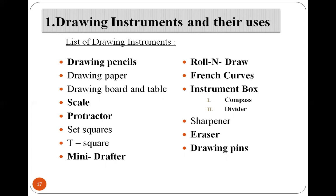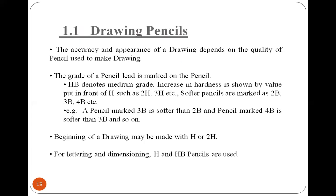Drawing pins are used for clipping the drawing sheets on the drawing board. The accuracy and appearance of a drawing depends on the quality of pencil used. Depending upon the grade — softer or harder — pencils are graded accordingly. 2B and 3B are softer pencils; 3B is softer than 2B, and 4B is softer than 3B, and so on. At the beginning of a drawing, use H and 2H grade pencils for projection lines or faint dimension lines. For lettering and dimensioning, use HB pencils which are thicker and darker.